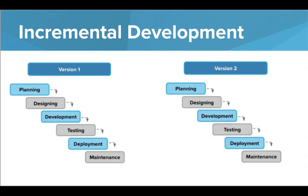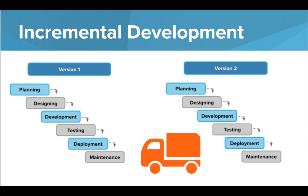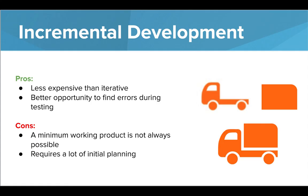Another option is the incremental development model. Instead of building the whole product, a smaller, very basic product would be developed and delivered first. This product would be fully functional, but would not include all of the features that should exist in the final version. This allows for more frequent deliveries and a shorter time for the client to wait for a usable product. Eventually, the extra features would also be developed and delivered to complete the whole product. This model is typically less expensive than the iterative model and leaves more room and time for testing than the waterfall model. However, creating a very basic working product is not always possible, and when it is possible, intensive planning is needed to split up the product into which successive features to build on.